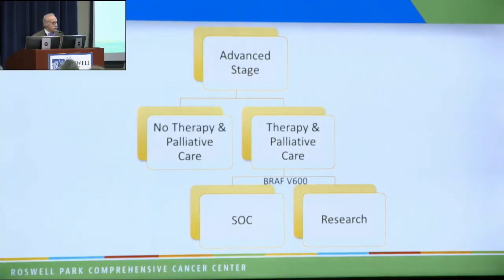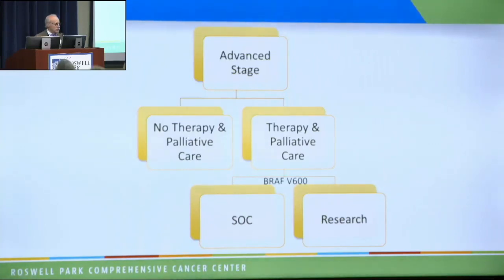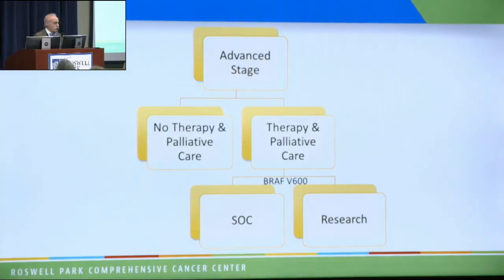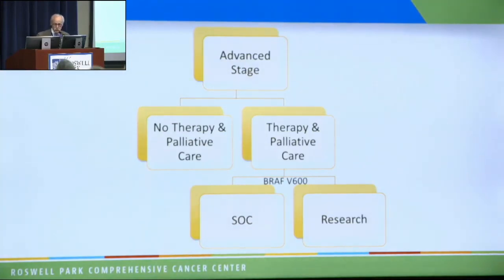For advanced disease, you can have advanced disease and choose not to receive treatment — we would always provide palliative care, but it's an active choice. Many of you in the room, particularly survivors, made the other choice to take treatment. Currently, we need to know whether you have the BRAF mutation, and then there is standard of care that Dr. Puzanov will talk about more. But there's always the research side of advancing your treatment — not just for yourself, but for the next generation of patients.